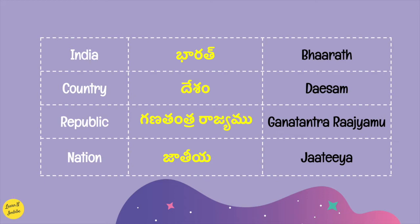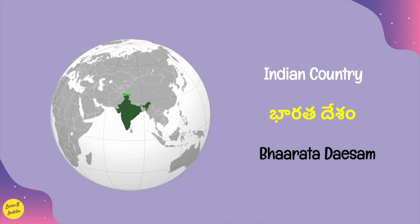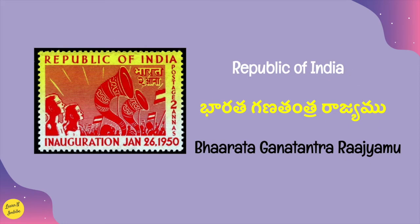First, let's learn about a few terminologies. India in Telugu is known as Bharat (B-H-A-A-R-A-T-H). Country is known as Desam. Republic is Ganatantra Rajyamu. Nation is Jatiya. Indian Country is Bharat Desam. Republic of India is Bharat Ganatantra Rajyamu.